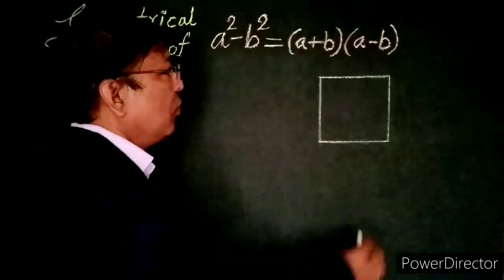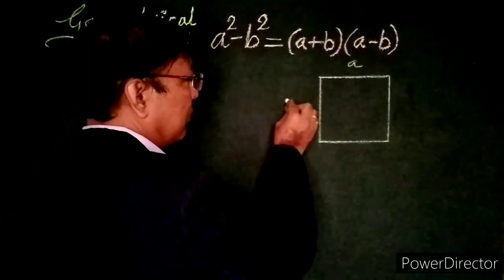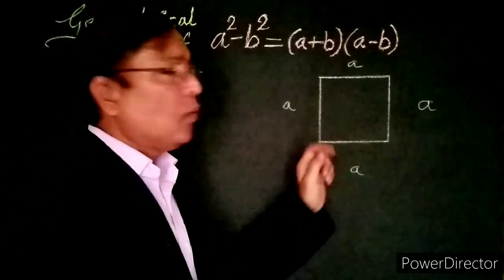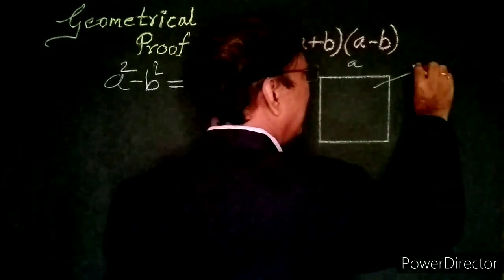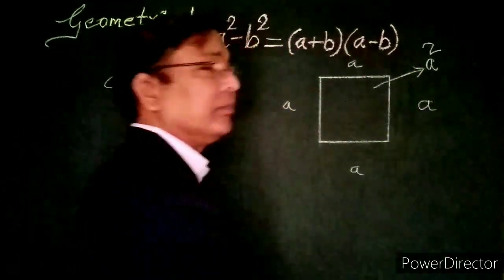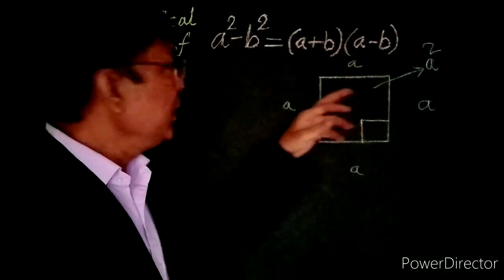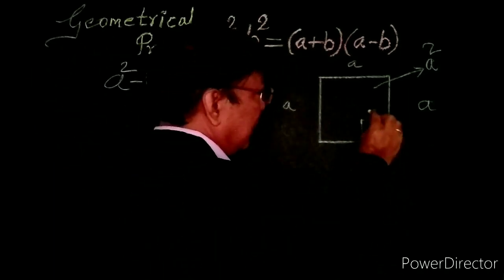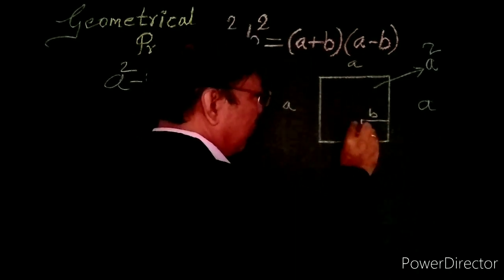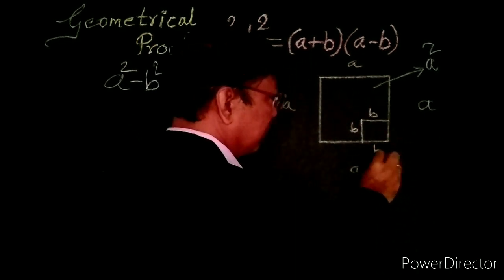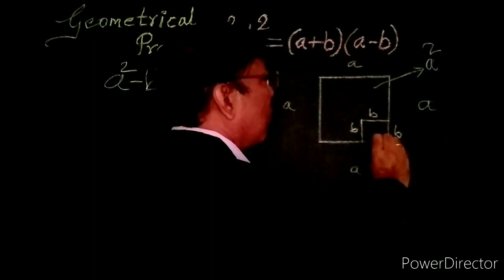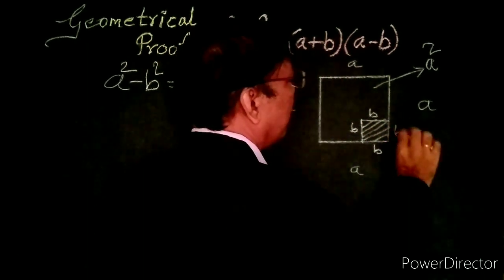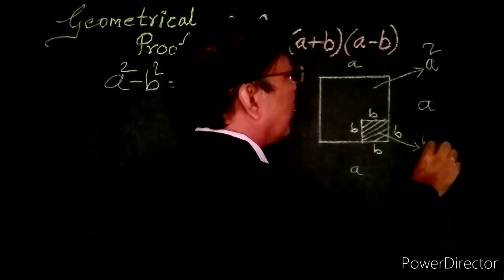Consider a square with sides a. This is a square with sides of length a. What is the area of this square? Obviously, it is a square. From this a square, we are going to subtract quantity b square. This is a square with sides b. What is the area of this square? That is b square. The area of this square is b square.